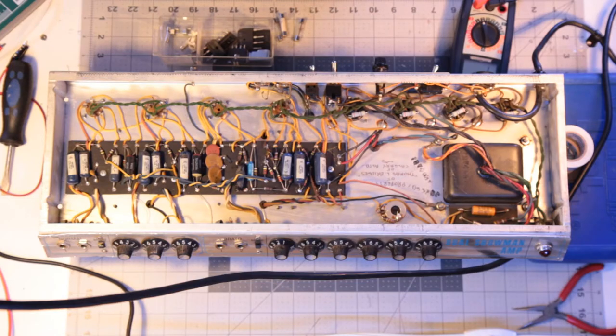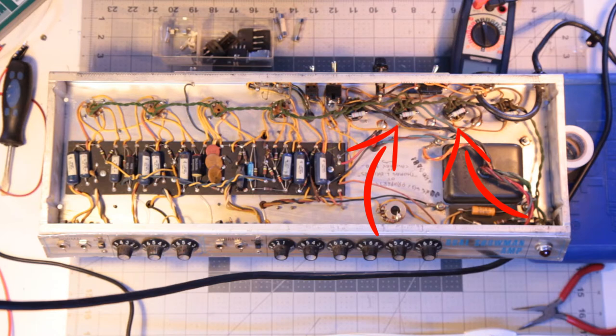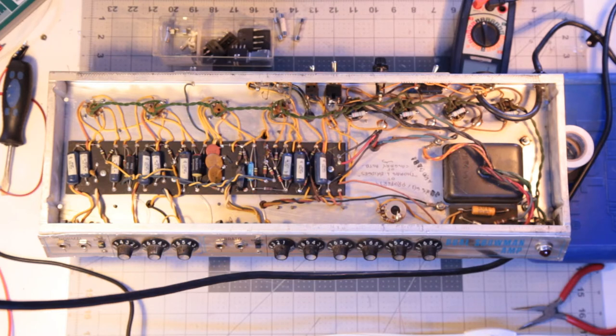This dual showman is a push-pull running two pairs of 6L6 power tubes in parallel to increase the output power. It can also run with a single pair on the inner socket or the outer socket. As you can see, all capacitors have already been recently replaced.